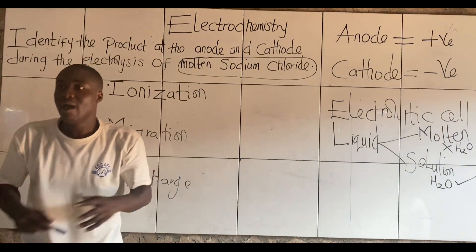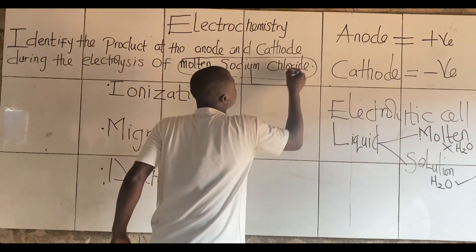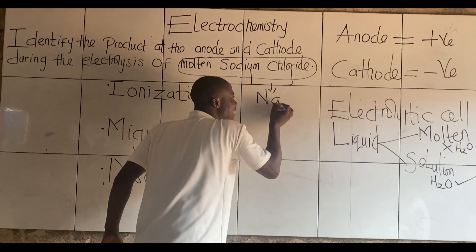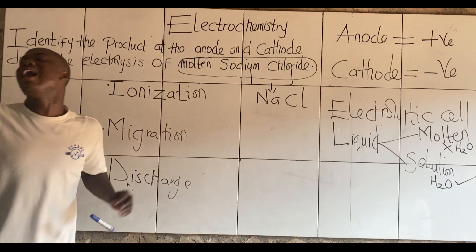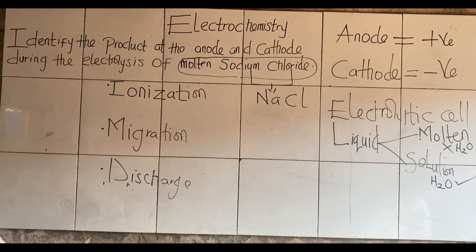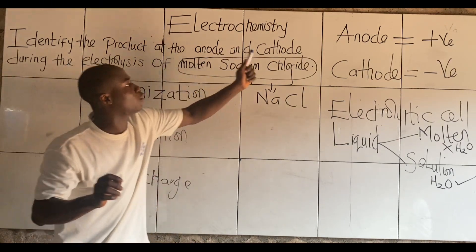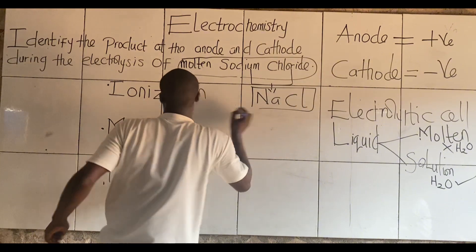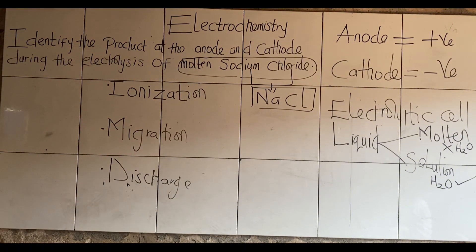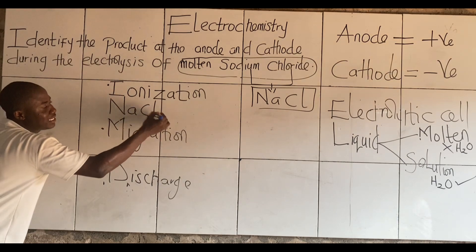So molten sodium chloride — first of all, even if you don't know what molten means, everybody should know what sodium chloride is. What is the chemical formula of sodium chloride? NaCl. And now, molten — is there water attached? No. But if you have sodium chloride solution, will there be water? Yes. So molten sodium chloride is just sodium chloride — NaCl.